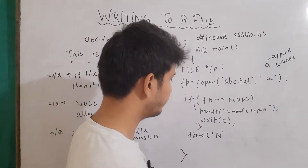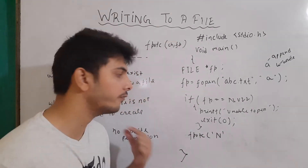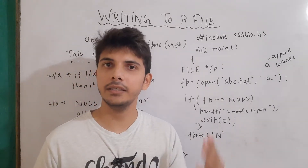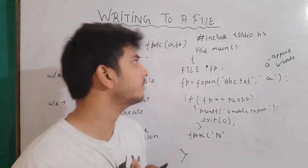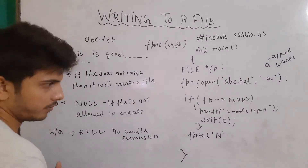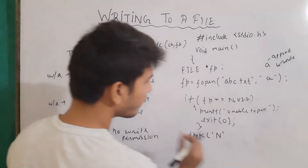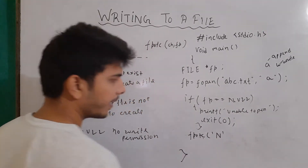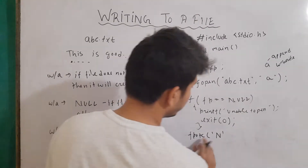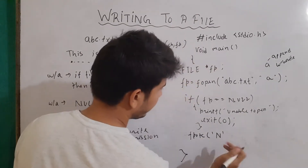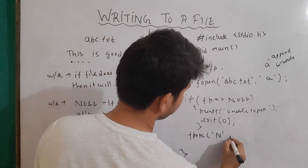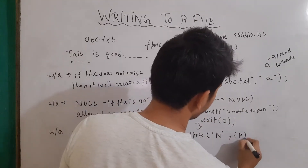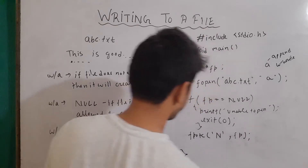In the next video, we will see how we can send or write the string and read the string using the functions fgets and fputs. But here we are talking about character-by-character writing. So I'll write 'n' and then give the file pointer fp, and n will be written there.